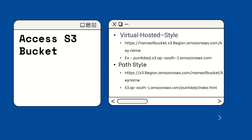The second type is path style, where you give: s3.region.amazonaws.com/bucket-name/key-name. For example: s3.ap-south-1.amazonaws.com/puneetdarji/index.html. So these are the two types of access in the S3 bucket.